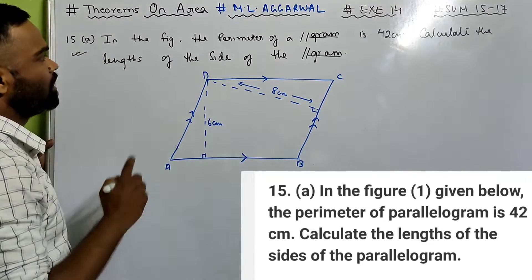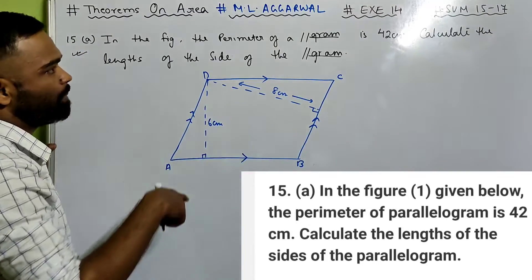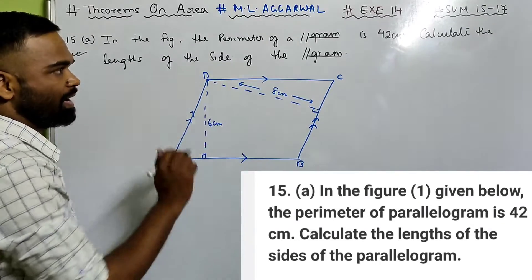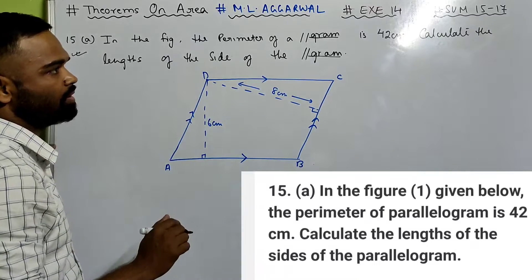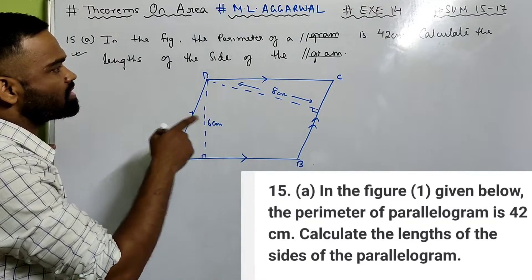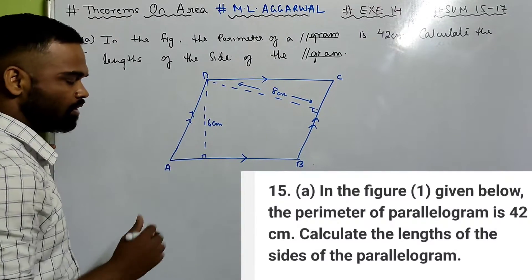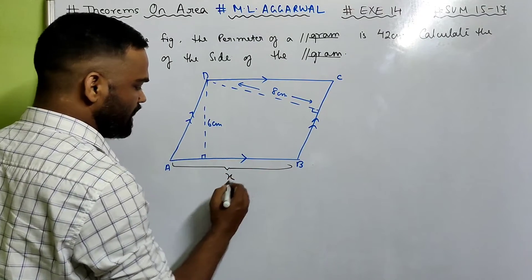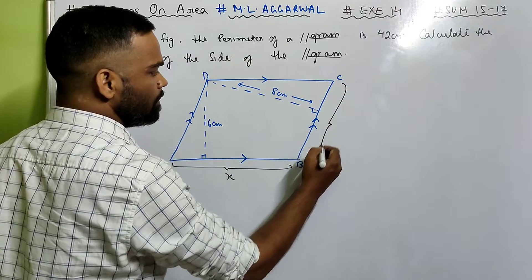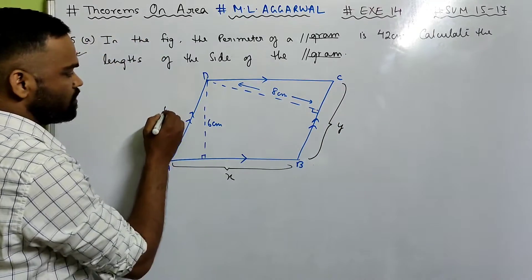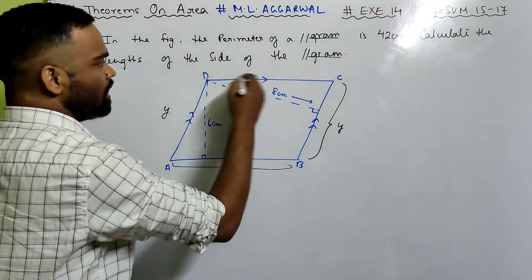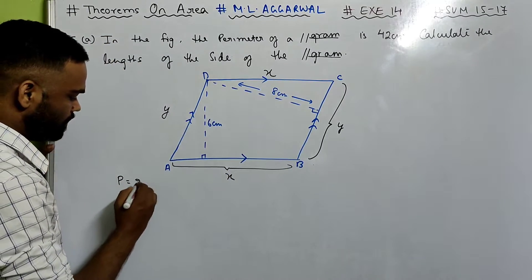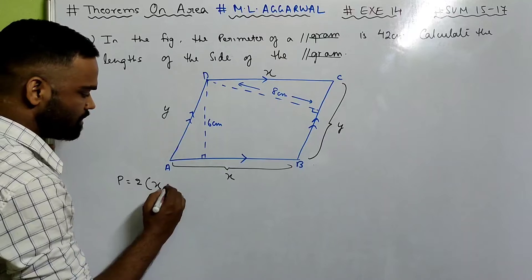15a. In the figure, the perimeter of this parallelogram is 42 cm, which means ABCD is the parallelogram with perimeter 42 cm. Calculate the length of the side of the parallelogram. Suppose I take AB as X units and BC as Y. So AD and DC will be X.